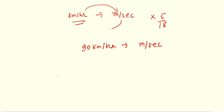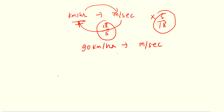And if you want to convert from meter per second to kilometer per hour, do the opposite — multiply by 18 by 5. So kilometer per hour to meter per second: multiply by 5/18. Meter per second to kilometer per hour: multiply by 18/5.